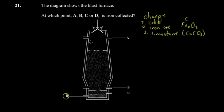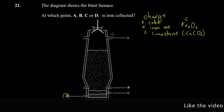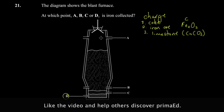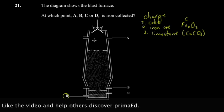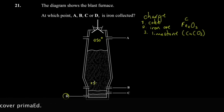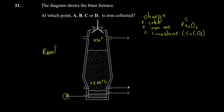Coke simply means purified carbon — it's one of the allotropes of carbon. The nozzles on the side are where you preheat air and introduce fuel, causing the temperature to increase. Typically the upper part is around 250°C, and it gradually reaches up to 1500°C at the bottom.